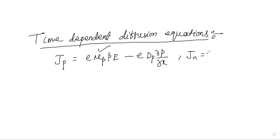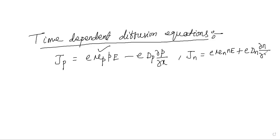Similarly, the current density for electrons has two terms. The drift current density for electrons is given by E times mu_n, the mobility of the electron, times n, the concentration of electrons, times E, the applied electric field. Plus the diffusion current density: E times D_n, the diffusion coefficient for electrons, times del n by del x, the variation of electron concentration with respect to distance.